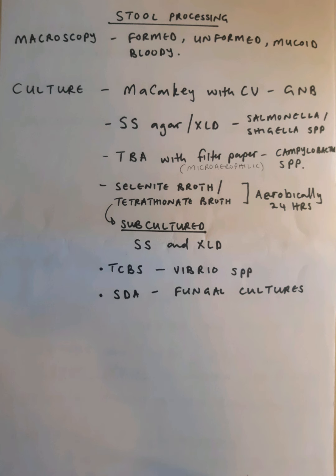Then we go to culture, where we use a set of different plates including a MacConkey plate with crystal violet, because this selects for gram-negative bacteria. We also have Salmonella-Shigella agar or XLD agar, which we use to identify Salmonella and Shigella species. Then we use a Thiosulfate blood agar with a filter paper, cultured micro-aerophilically, to identify Campylobacter species.